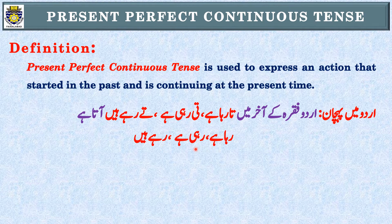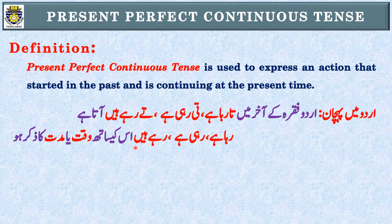آپ کہیں گے کہ 'رہا ہے، رہی ہے، رہے ہیں' تو Present Continuous Tense میں آتا ہے — yes، ایسا ہی ہے۔ اگر اردو فقرہ کے آخر میں simple 'رہا ہے، رہی ہے، رہے ہیں' آ جائے تو وہ Present Continuous Tense کا sentence ہوتا ہے، لیکن اگر اس کے ساتھ وقت یا مدت کا بھی ذکر آ جائے تو وہ Present Perfect Continuous Tense کا sentence کہلائے گا۔